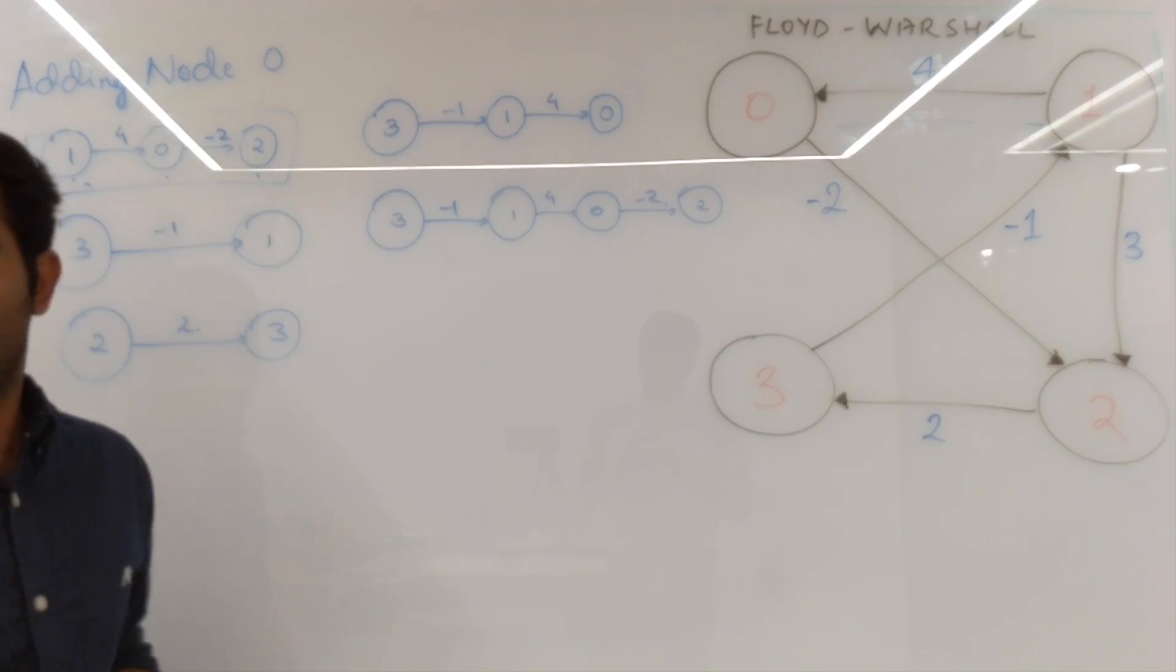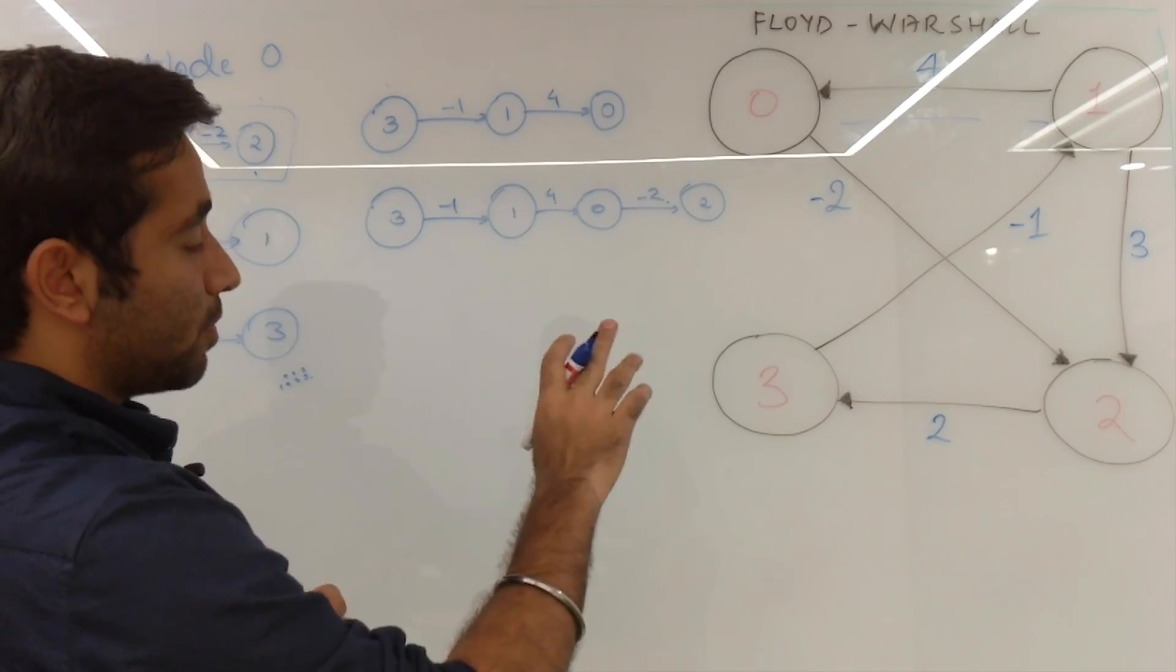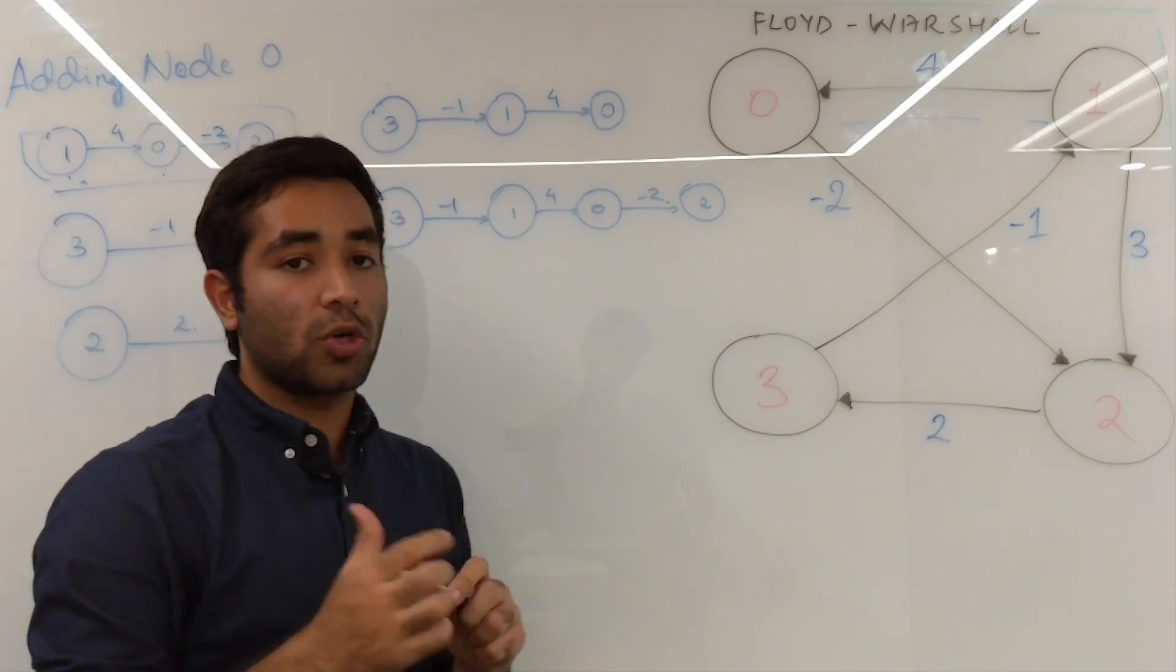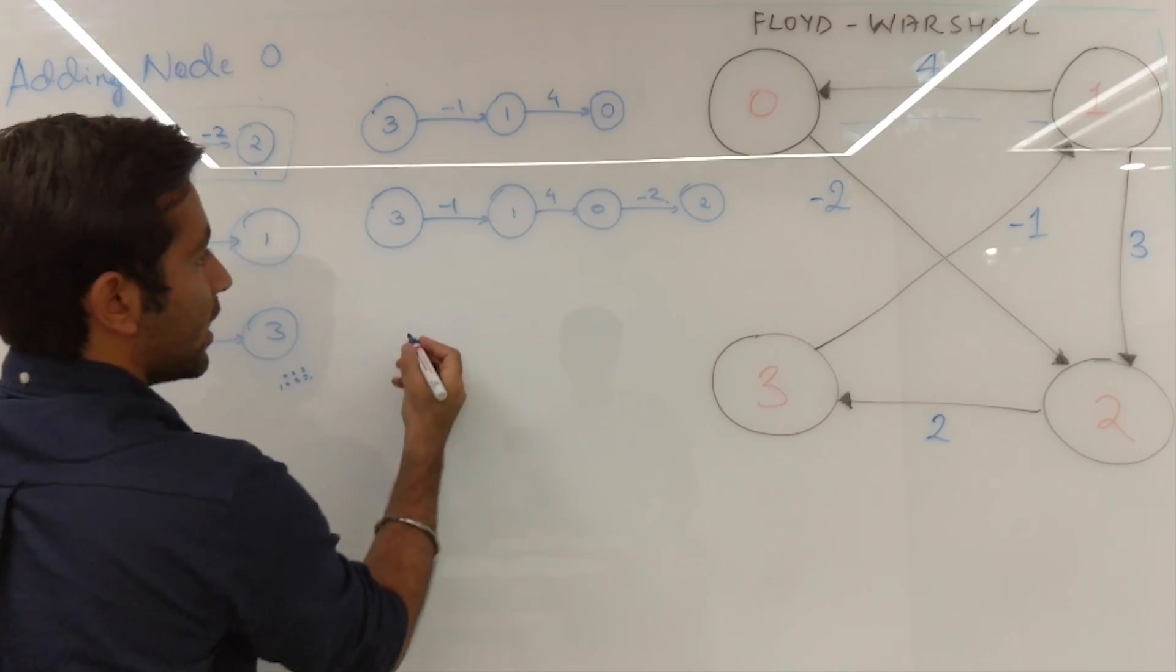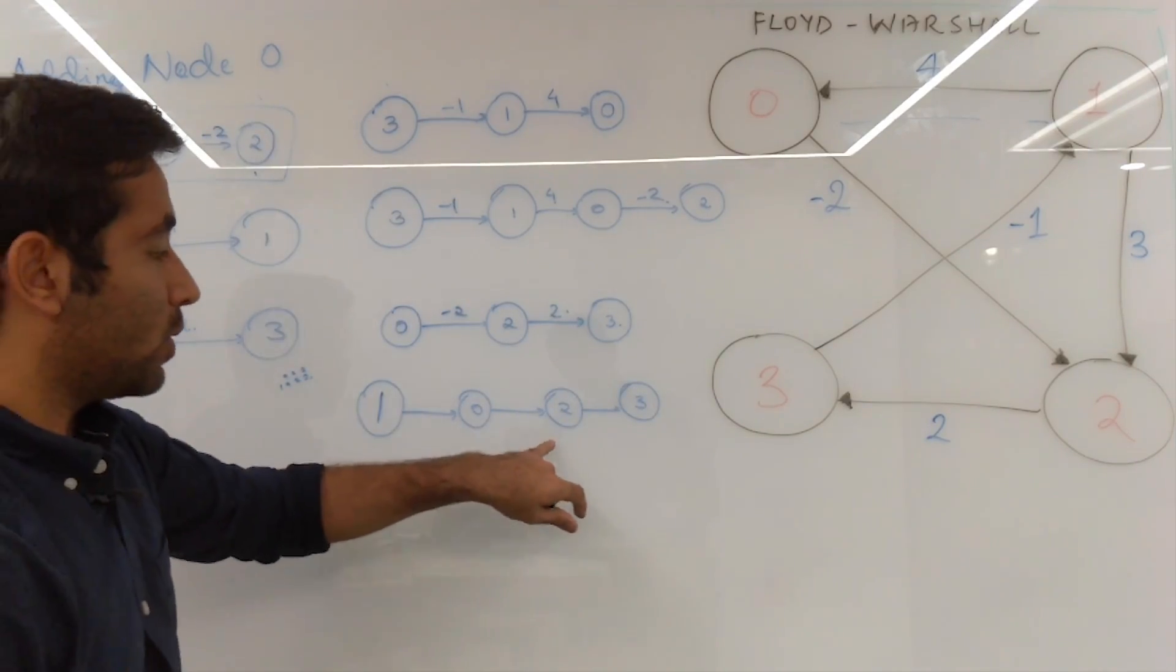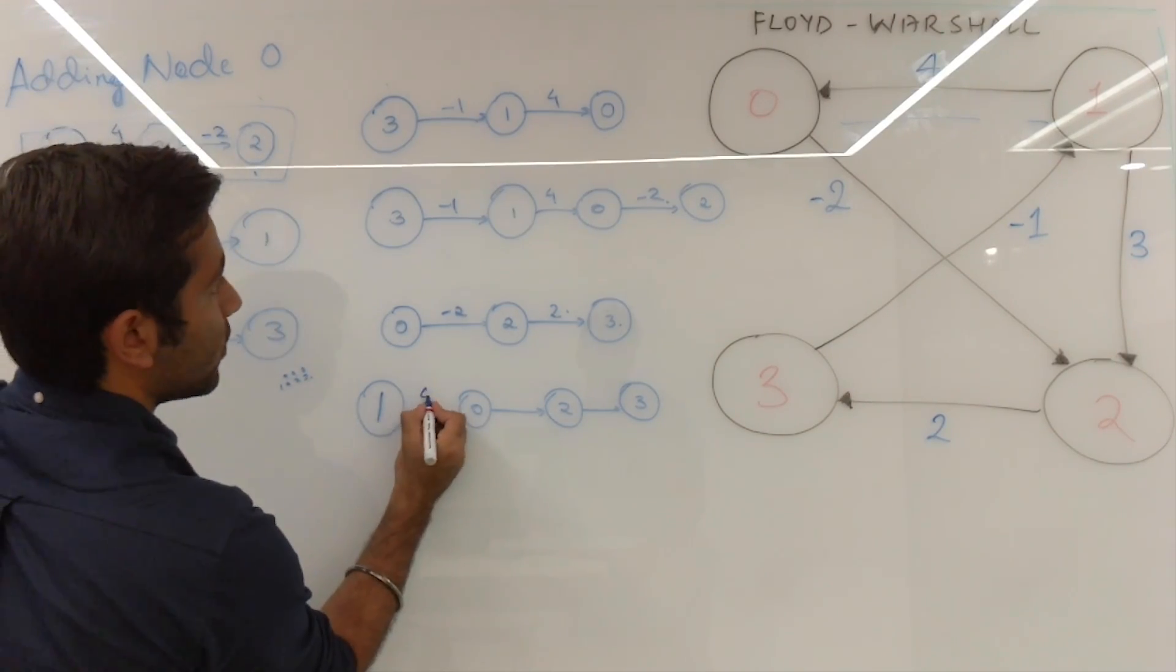So this is what we have after two iterations, that is addition of node zero and node one. Now we will similarly focus on node two and what all paths pass through two and are also shortest. So both these conditions should be satisfied when we are adding node two to it. Similarly, this is another path which passes through two and impacts the existing solution.